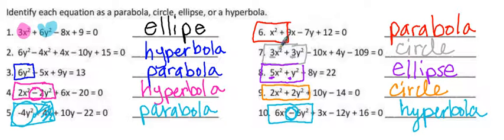When we're identifying conics, you're looking at the squared terms, whether they are being added or subtracted, and if the coefficients are the same.